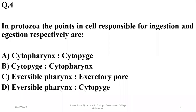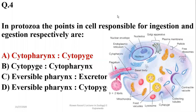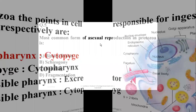Question three also asks: in Protozoa, the points responsible for ingestion and egestion of food respectively. The cytostome is the point in Protozoa concerned with ingestion of food, and the cytopyge is the point for egestion. So the correct option is A.